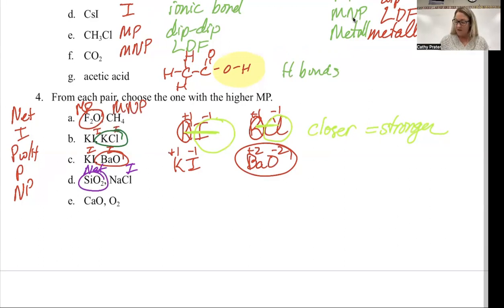For E, calcium oxide is ionic, O2 is nonpolar. Ionics are above nonpolars. Calcium oxide wins.